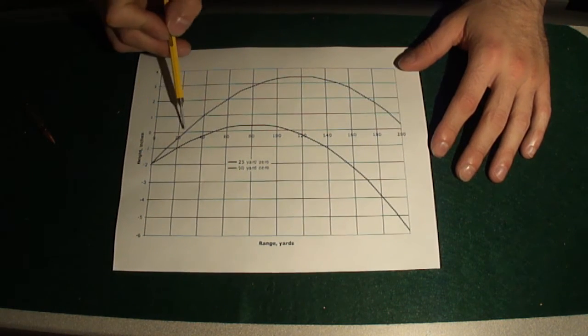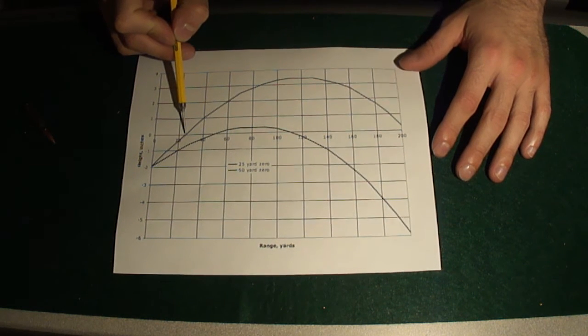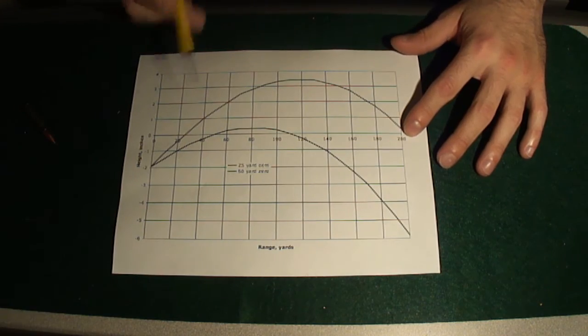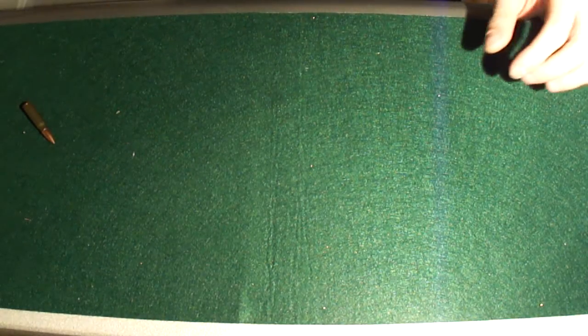So what I did is I sighted my rifle in at 25 yards, just so that I would have a longer effective range, and I don't mind the three-inch rise. So now looking at the VZ, how accurate is it, or how do you sight it in?